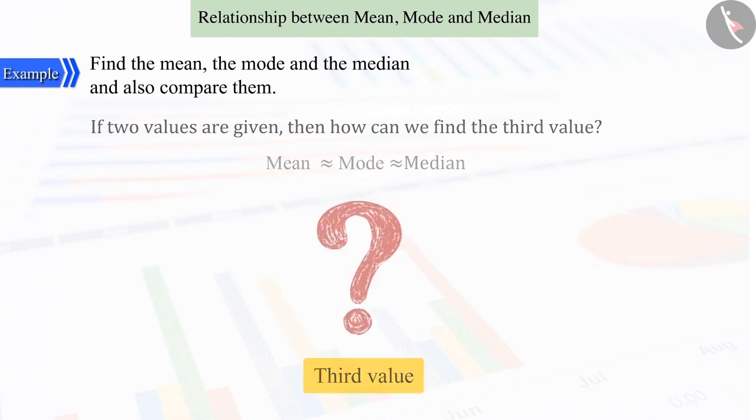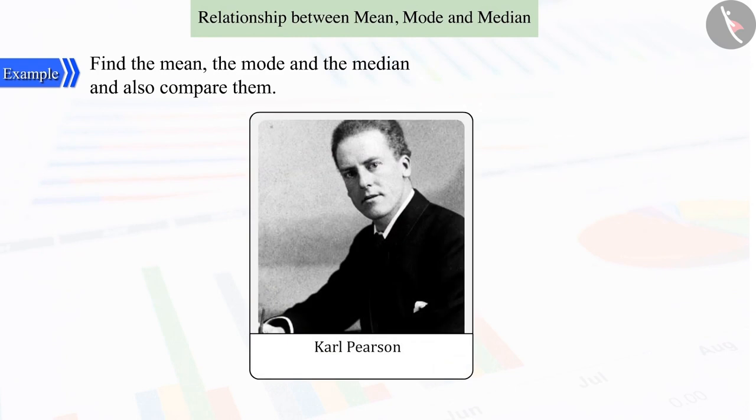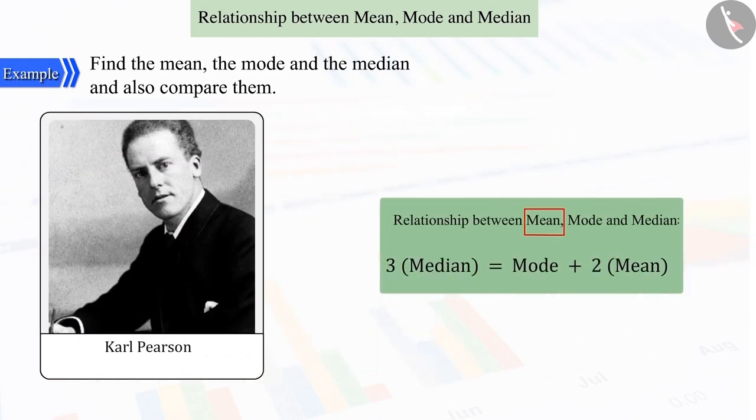For this, the great mathematician Karl Pearson said that, a relation between mean, mode and median would be three times the median is almost equal to mode plus two times the mean.